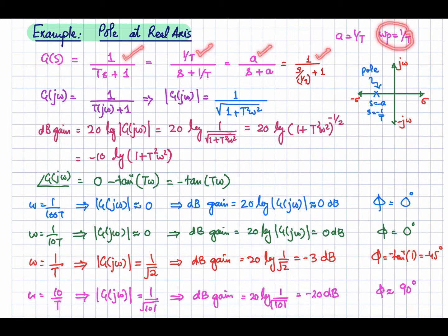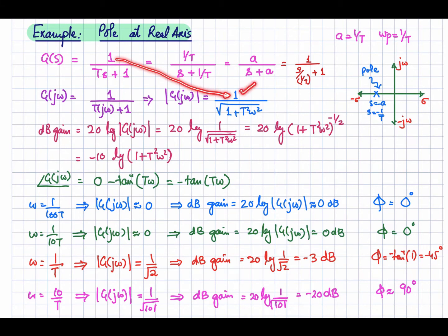Let's suppose you have one pole at the real axis and the frequency of that pole is 1/τ. First, let's write down this transfer function in the form of the sinusoidal transfer function, obtained by replacing s with jω. The magnitude will be equal to the magnitude of the numerator divided by the magnitude of the denominator. The numerator is 1, and the denominator gives us √(1 + τ²ω²).